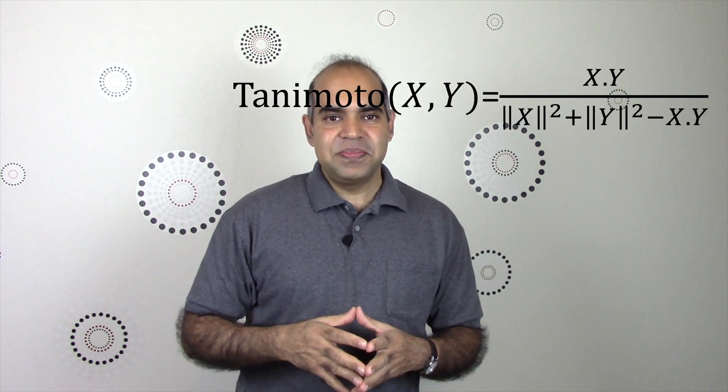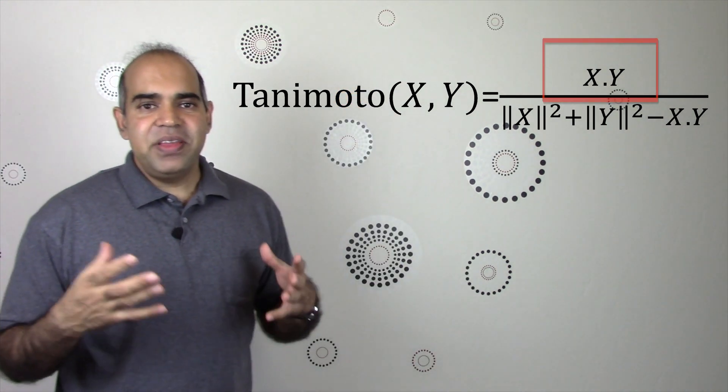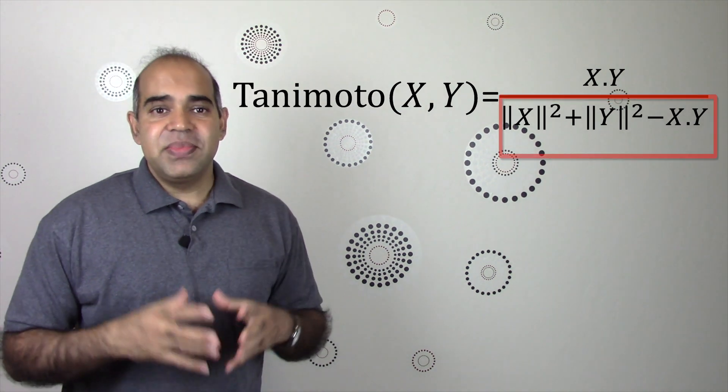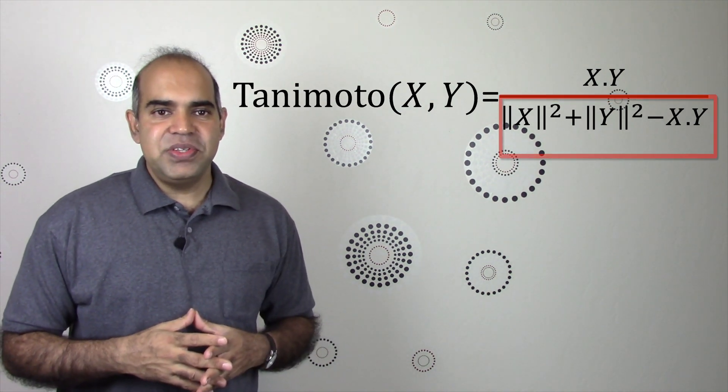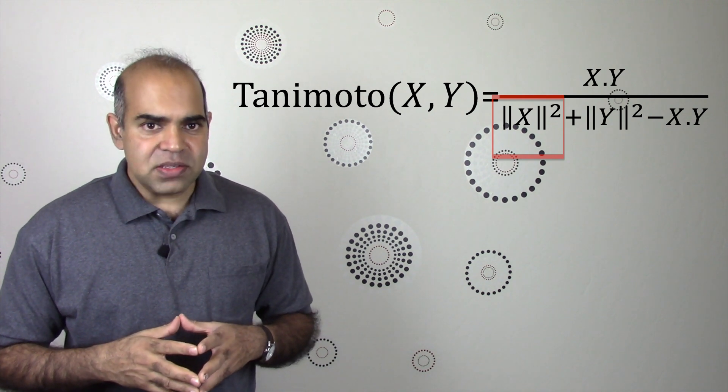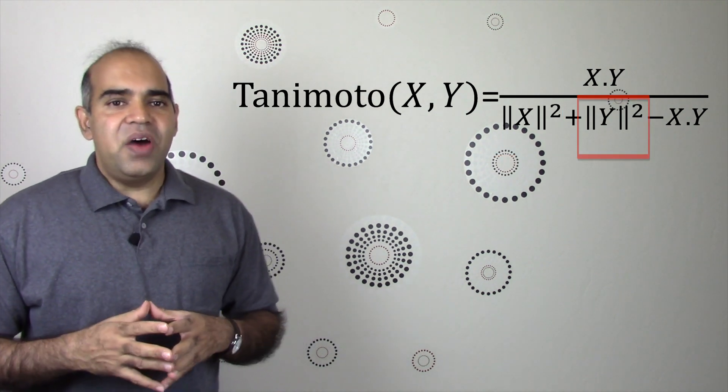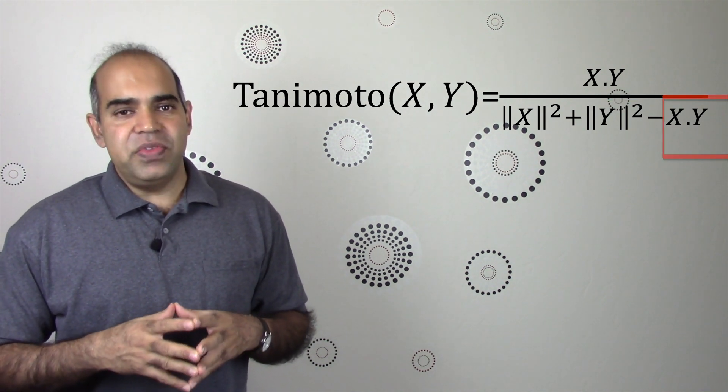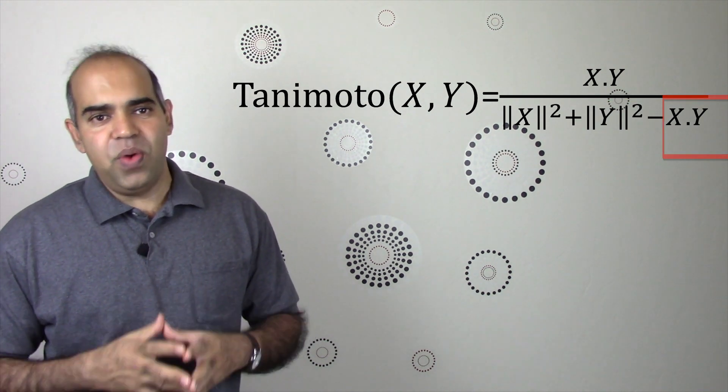Tanimoto coefficient or index or similarity between two vectors X and Y is computed using the following formula. In the numerator, you have the dot product of the two vectors X and Y. The denominator is composed of the square of the norm of vector X plus the square of the norm of vector Y minus the dot product of the vectors X and Y.